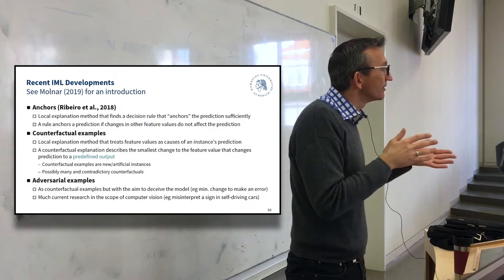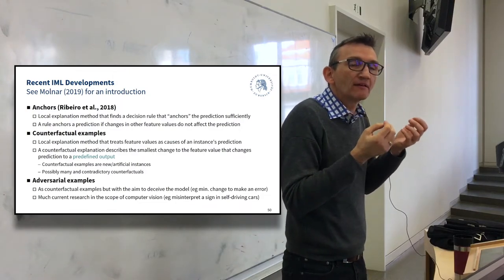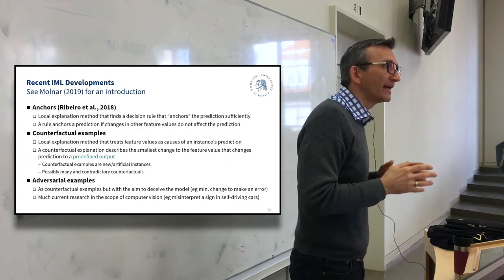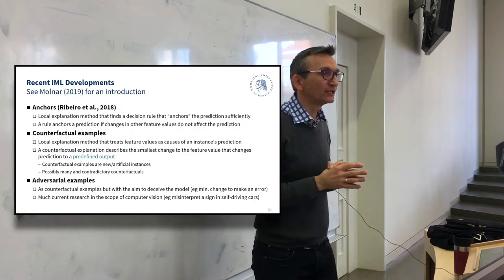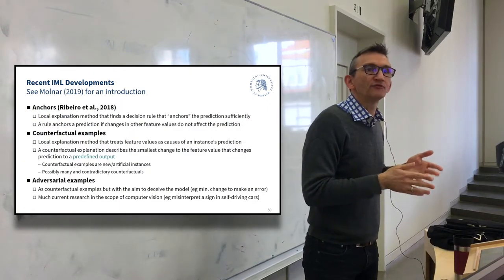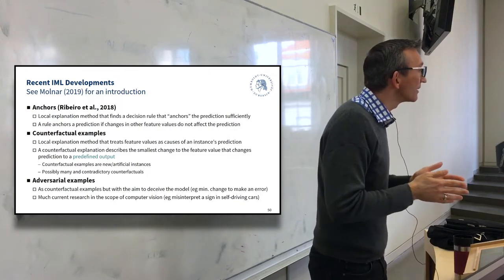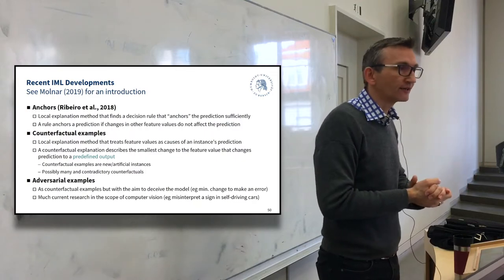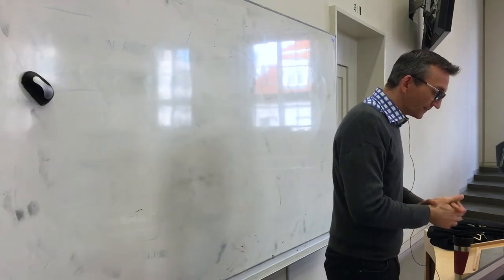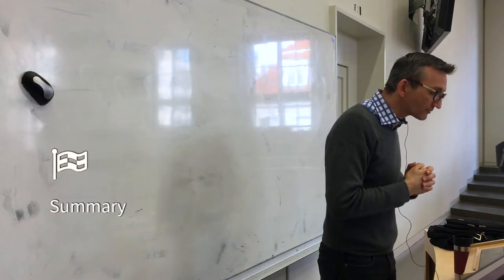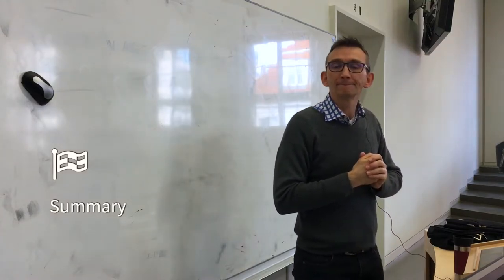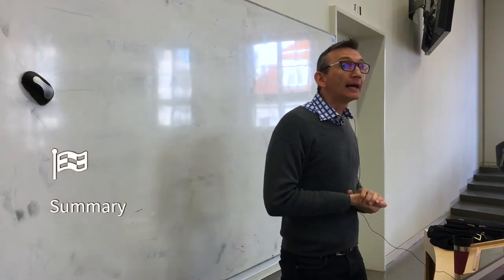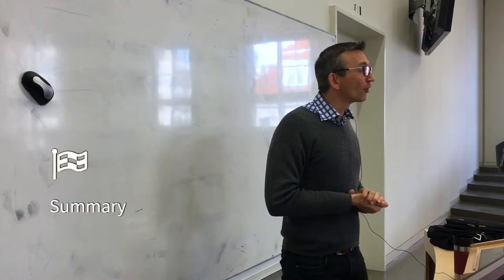My aim here is that you get a vague feeling for the gist of these example-based explanation techniques. We haven't looked into any of them in depth — how they work. If you're interested, have a look at the blog. Very current stuff, very recent research, also really interesting for follow-up studies. And with that, I want to conclude the interpretation chapter at least until the tutorial starts and move on with something else.